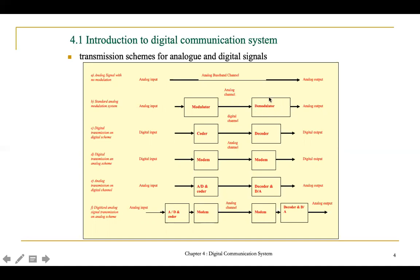The third scheme is digital transmission on a digital channel — input and output are in digital form, transmitted through a digital channel using a coder and decoder. The fourth scheme is digital transmission on an analog channel — you still have digital input and digital output, but the transmission process is analog, so you need a modem. The key difference is that scheme C uses a digital channel while scheme D uses an analog channel.